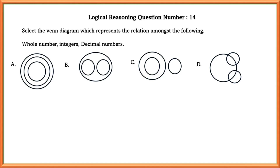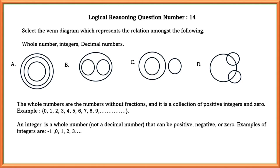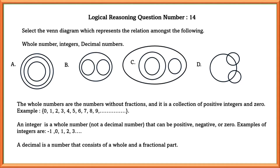Logical reasoning question number fourteen: select the Venn diagram which represents the relation amongst whole numbers, integers, and decimal numbers. Whole numbers are positive integers and 0, with no fractions. Integers can be positive, negative, or 0, but not decimal. A decimal number has a whole and a fractional part. Since whole numbers fit inside integers, but decimal numbers are outside both, option C is correct.